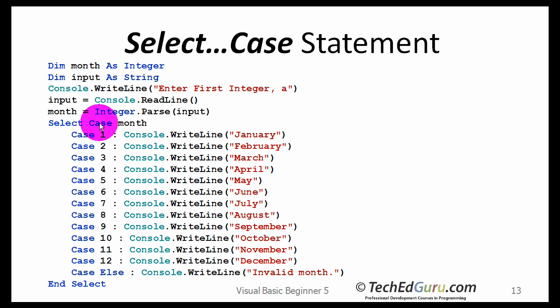Then, using the select case statement, you are saying, make a decision based on the value of the variable month. If the value of the variable month is 1, case 1, then you are going to do this. If not, if the value of the variable is 2, you are going to do that, etc.